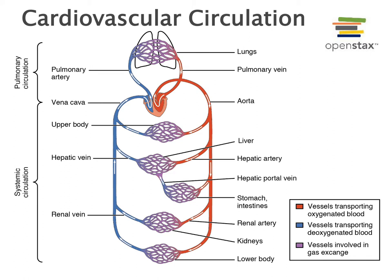These smaller branches distribute blood to different regions of the body. These medium-sized arteries are known as muscular arteries. For example, the brachial artery carries blood through your arm. On the diagram, the hepatic artery is an example of a muscular artery distributing blood to the liver, and the renal arteries are muscular arteries that deliver blood to the kidneys.